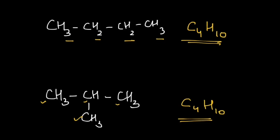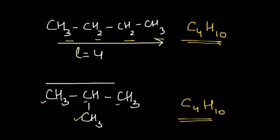Now let's see what makes them chain isomers. Look at all the carbon atoms in the first compound — they are in a straight chain, so we have a chain length of 4 carbon atoms. In the second compound, if you try to find the chain length, you can go either straight or take the curved path and still get a chain length of 3. Since the length of the parent chain in the two compounds is different, they are chain isomers.